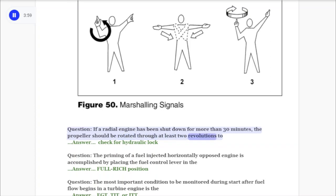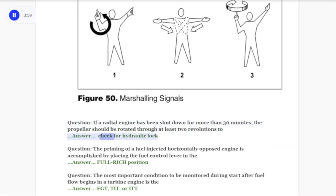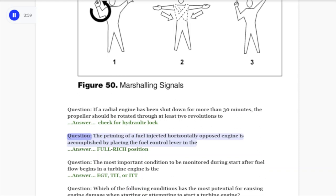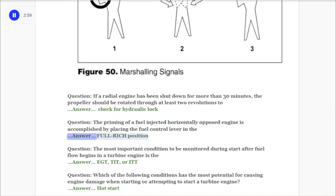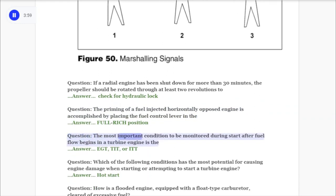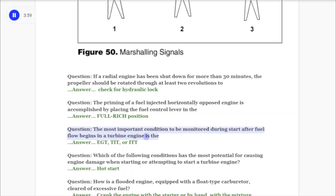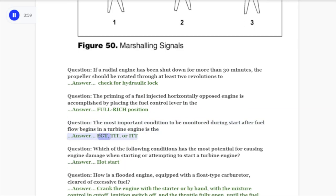Question: The priming of a fuel-injected horizontally opposed engine is accomplished by placing the fuel control lever in the? Answer: Full rich position. Question: The most important condition to be monitored during start after fuel flow begins in a turbine engine is the? Answer: EGT, TIT, or ITT.